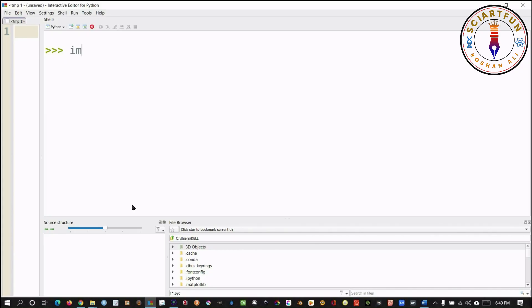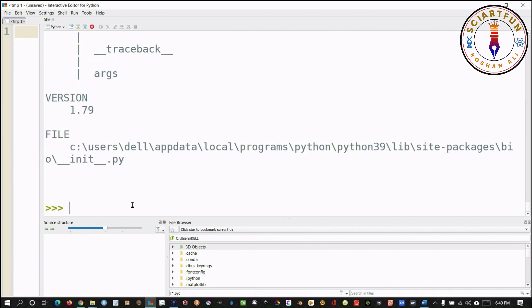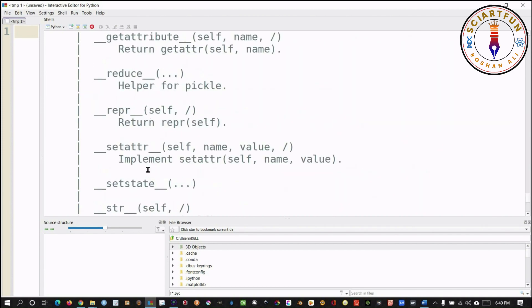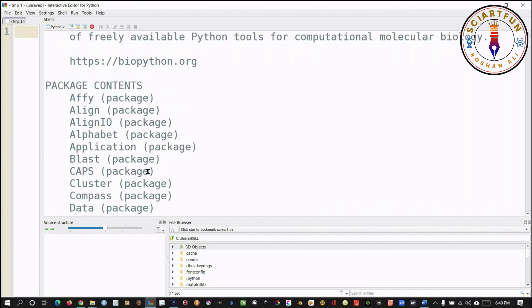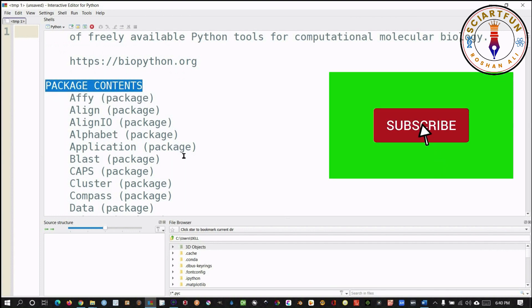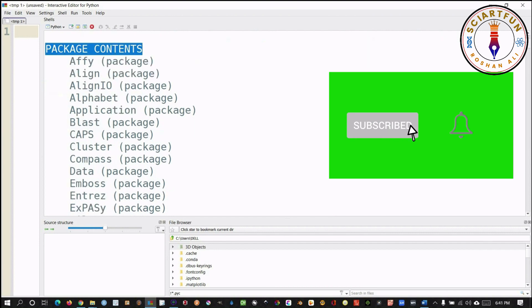In this method first import the package bio. Now run this command. Scroll up to package content or use control F to find package content. Here is the list of sub-packages and modules inside the bio package.